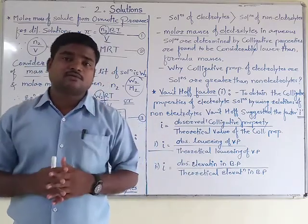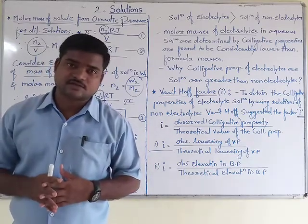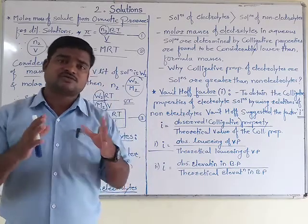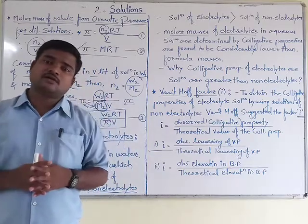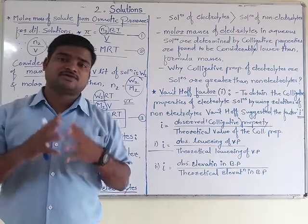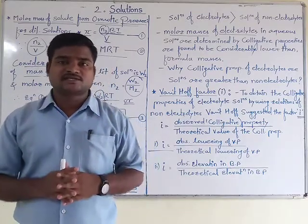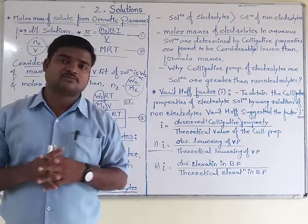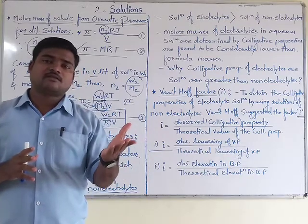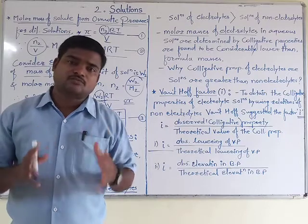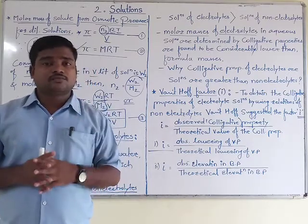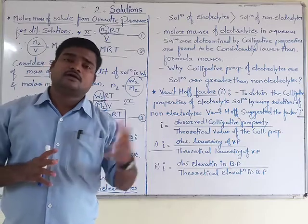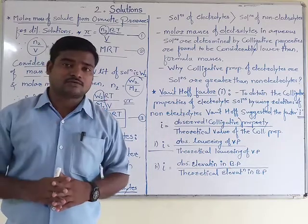If dissociation of electrolytes takes place, it leads to corresponding ions. If the number of ions increases, the number of solute particles also increases, and this will affect the colligative properties. Colligative properties depend on the number of particles — if the number of particles is more, the colligative property will also be more. Therefore, for electrolytes the colligative property value will always be more as compared with non-electrolytes.